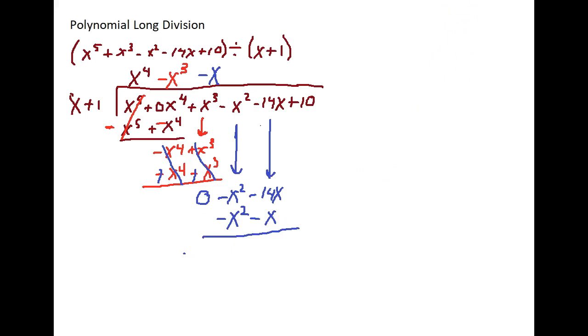Okay, now I have to subtract. So how do you subtract a negative? Minus a negative becomes positive. So minus a negative becomes plus. Minus a negative becomes plus. And we subtract them straight down. So this one cancels out. So negative 14x plus x is negative 13x.